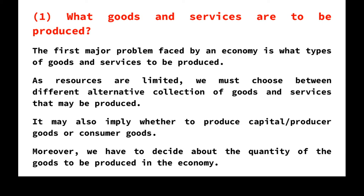Society decides which goods or services it wants to produce and also determines the quantity required. For example, should we produce more guns or more butter? Do we opt for capital goods like machines and equipment, or consumer goods like cell phones? Society must decide the type and quantity of goods or services to be produced.